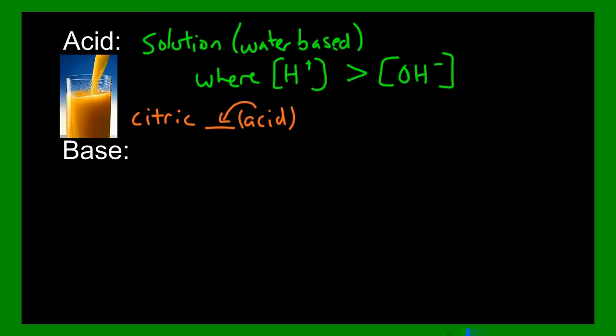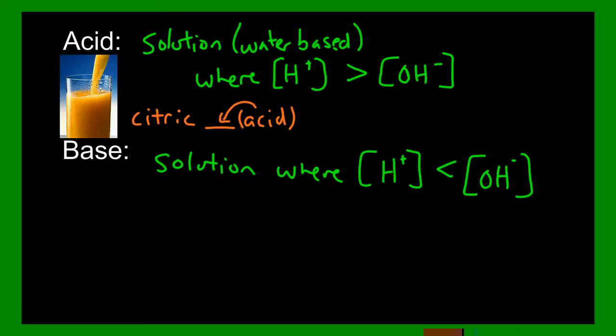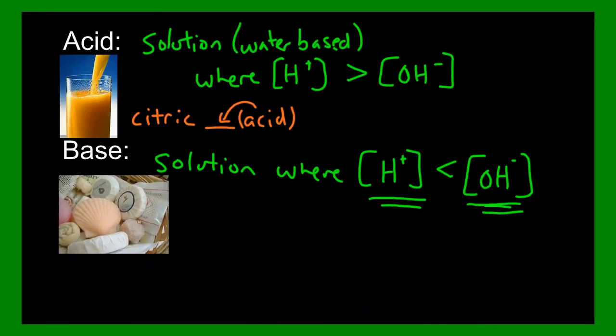Well we also have bases, and a base is any solution, any solution, again water-based, where the number of the hydrogen ions is less than the number of the hydroxide ions. And this is happening where sometimes you have solutions where you end up having less of these and more of these. Some common bases are things like toothpaste, soap, bleach, and other household cleaners. What do they all have in common? They're all cleaners. Toothpaste cleans your teeth, soap cleans your body, bleach cleans your counters. Cleaners tend to be basic. A lot of the foods you eat can be acidic, but we generally don't eat cleaners, so you generally eat things that are not as basic.